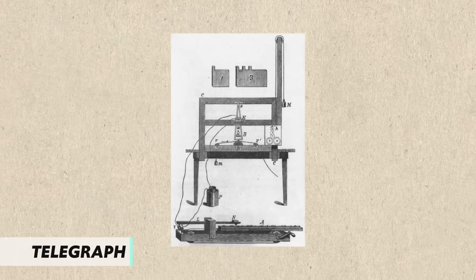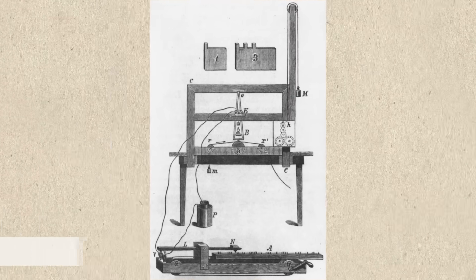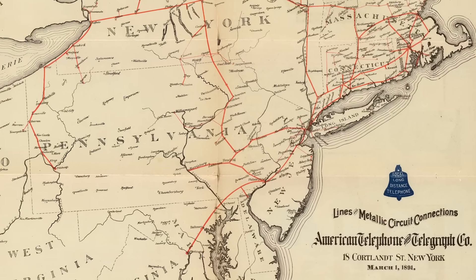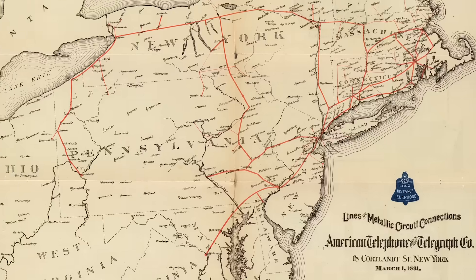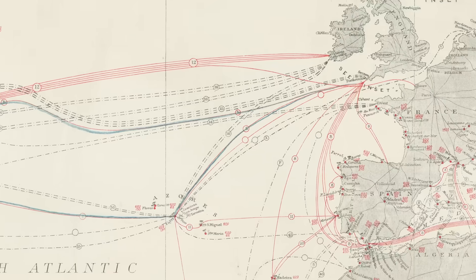Yet another innovation that set the stage for the expansion of industry during this period had to do with communications. The telegraph was invented by Samuel Morse back in 1844, but it was during this period that telegraph wires multiplied significantly. Communication could now travel long distances at the speed of electricity. Most notable during this period was the laying of a transatlantic cable connecting America to Europe, which had the effect of creating an international market for basic goods like coal, oil, steel, and grain.